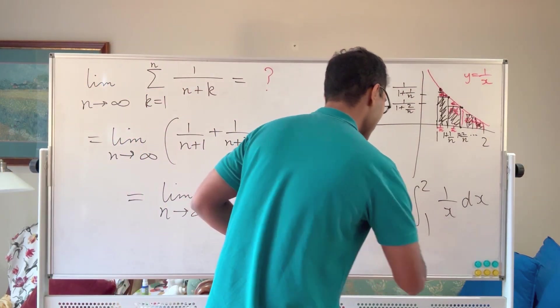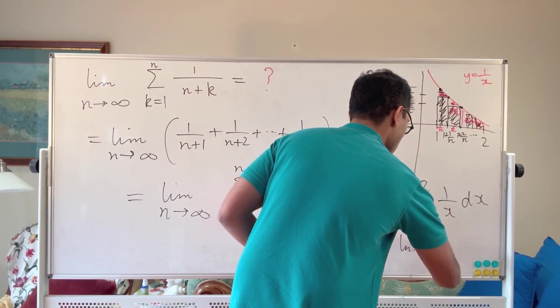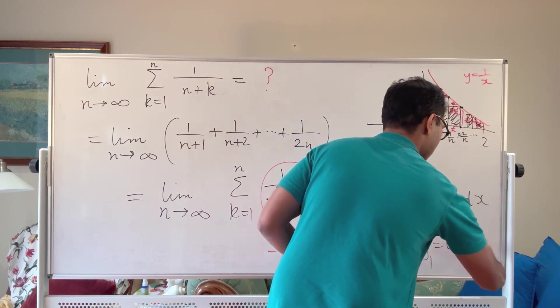So what we can do is we can write this as it's going to be log x from 1 to 2. So it's going to be log 2 minus log 1.